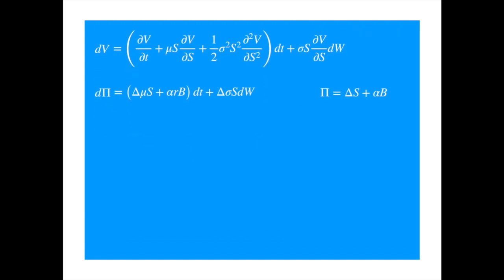We can again combine the dt terms, and we have the familiar SDE of our portfolio. Now, our total portfolio consists of an option, delta units of the stock, and alpha units of the bank account.